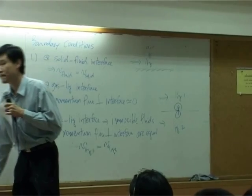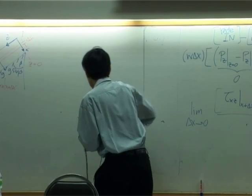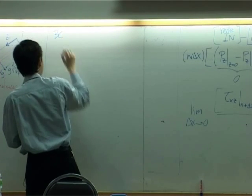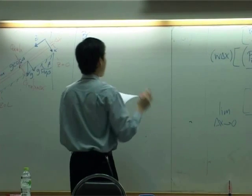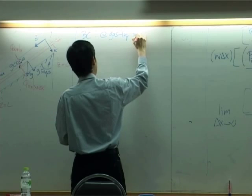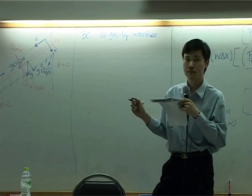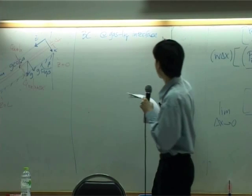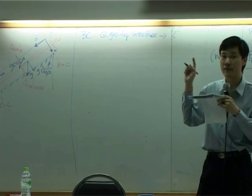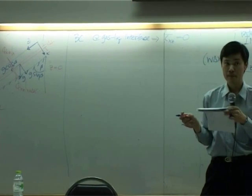So what is momentum flux at the interface? Tau. So our boundary condition would be at gas-liquid interface, momentum perpendicular to that interface, which is tau xz, should equal to zero.